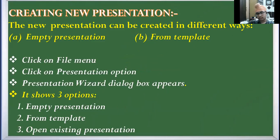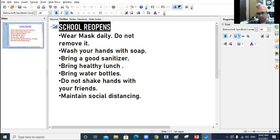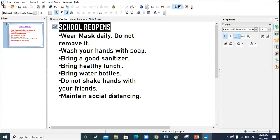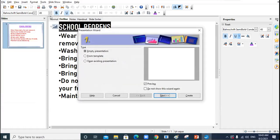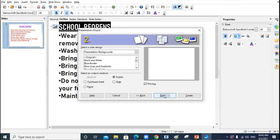Now how to create a new presentation? Whenever you want to create a new presentation, click on File, click on New, click on Presentation. The first step which appears is the Presentation Wizard. It will show three options: Empty Presentation, From Template, and Open Existing Presentation. Select Empty Presentation and click Next to go to the next step.